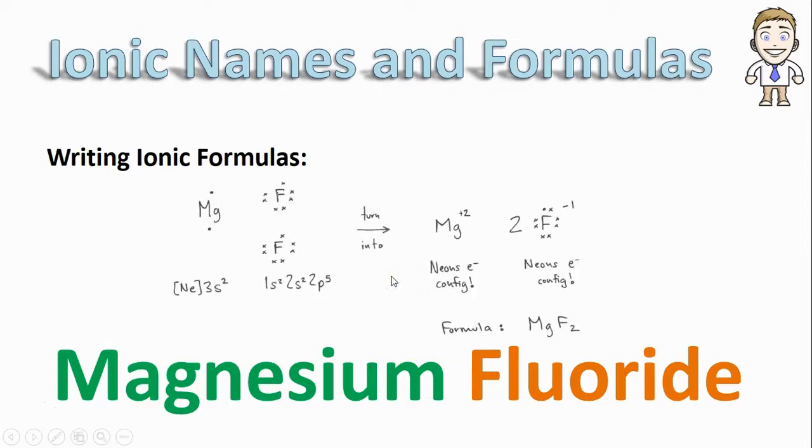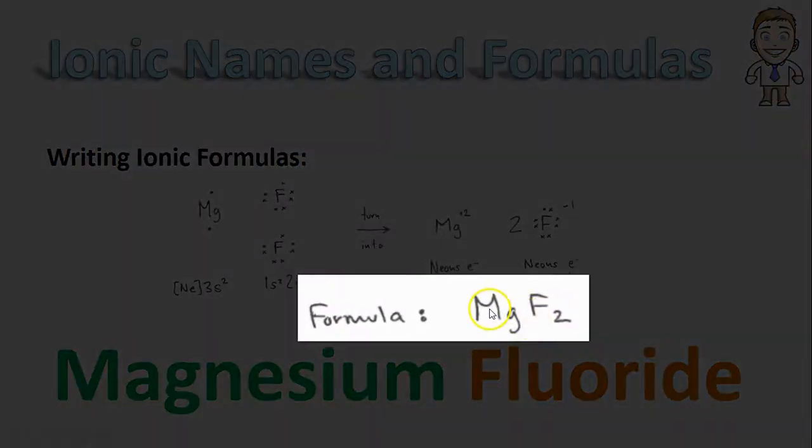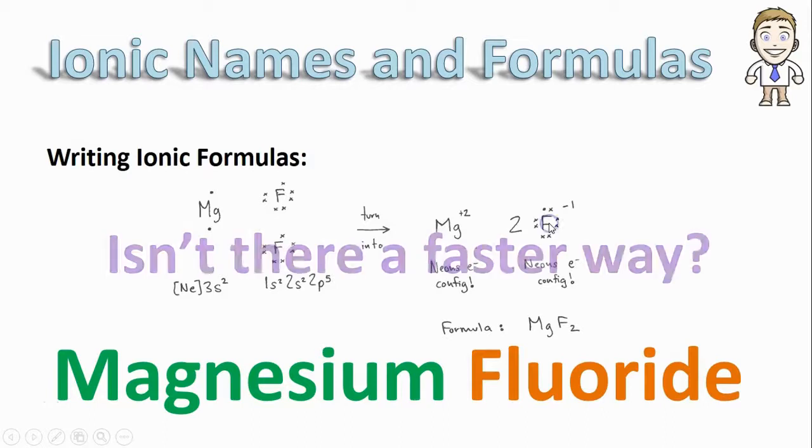We should mention that we've already covered one way to do this in earlier videos that explain how to draw a model for ionic bond formation. One of the results was the formula MgF2 because of the two fluorides. The only problem is it takes a really long time. If all you needed was the formula, isn't there a faster way?